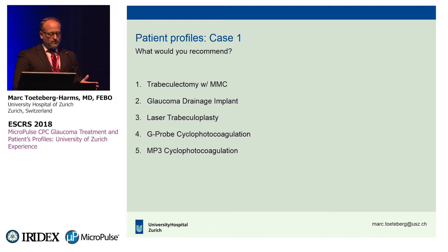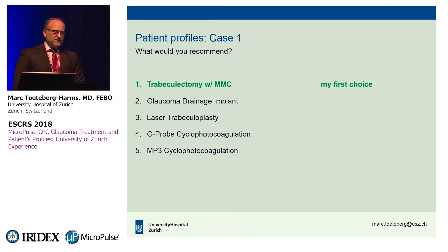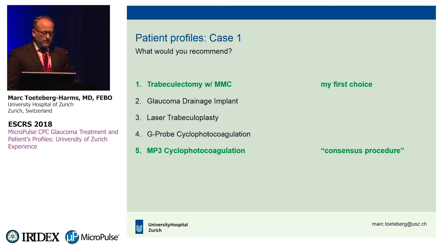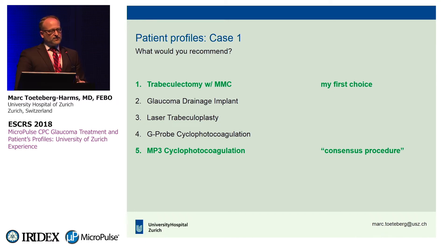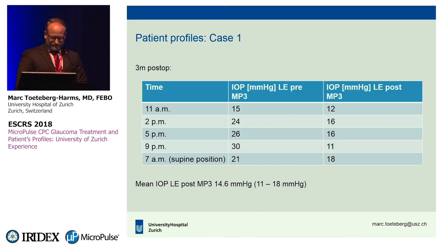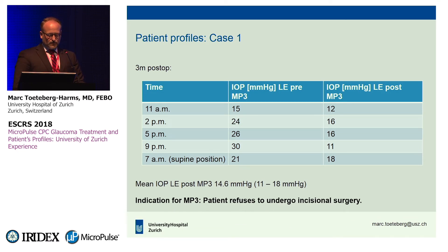Looking at what you recommend for this patient: trabeculectomy or a tube, laser trabeculoplasty which is probably not effective at this high pressure, or a G-probe or MP3. My first choice would have been trabeculectomy, but the patient didn't want any surgery involving a knife. As a consensus procedure, we did a micropulse procedure. I wasn't comfortable doing a G-probe because I was expecting to do a trap later, and the G-probe can cause inflammation whereas MP3 causes less. The pressure went down to a mean of 14.6 with a range of 11 to 18. The indication here was patient refusal of incisional surgery while still needing pressure reduction quickly.